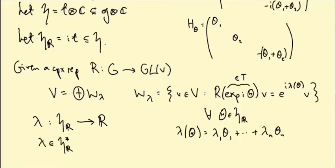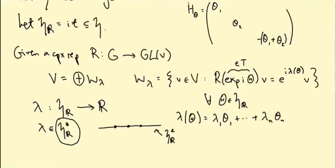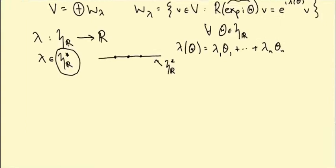So lambda really lives in the dual space to H subscript R - in other words, is a linear map from little H_R to the reals. So the weight diagrams we've been drawing are subsets of this vector space H_R^*. For SU(2), we have the line with some dots. That line was little h_r dual, where in this case H is really just a one-dimensional vector space.